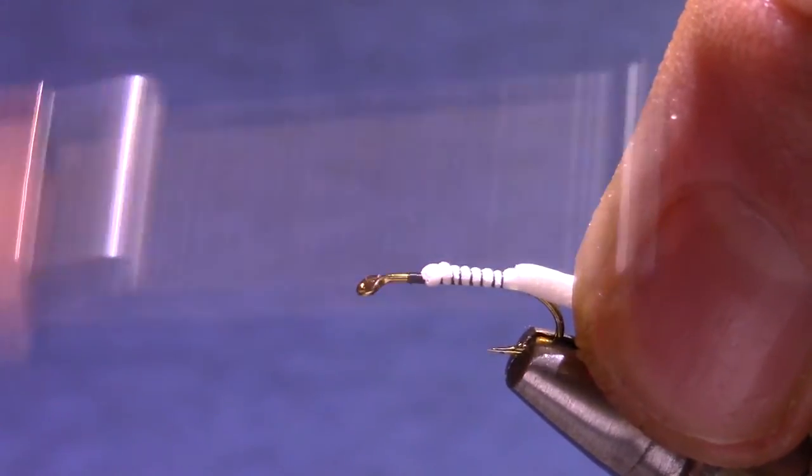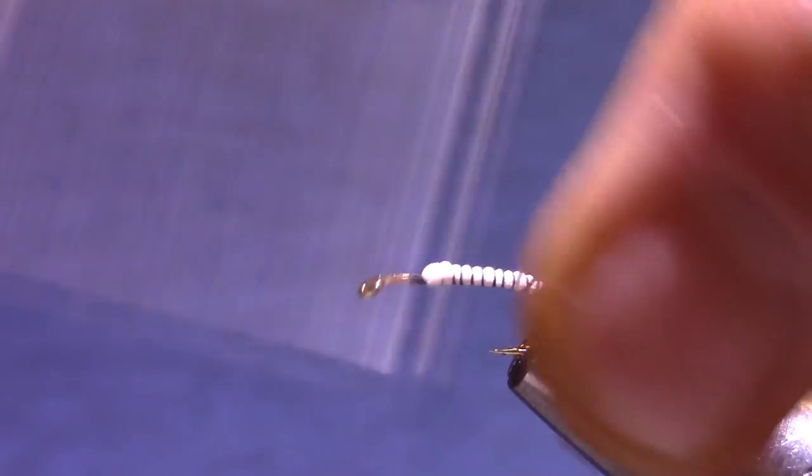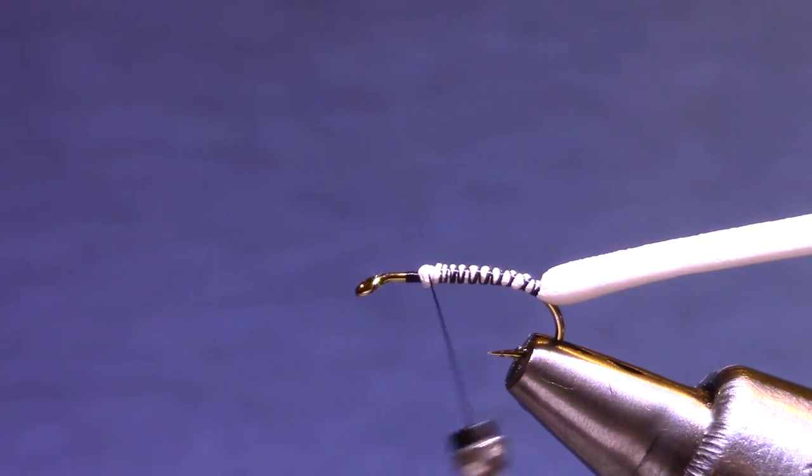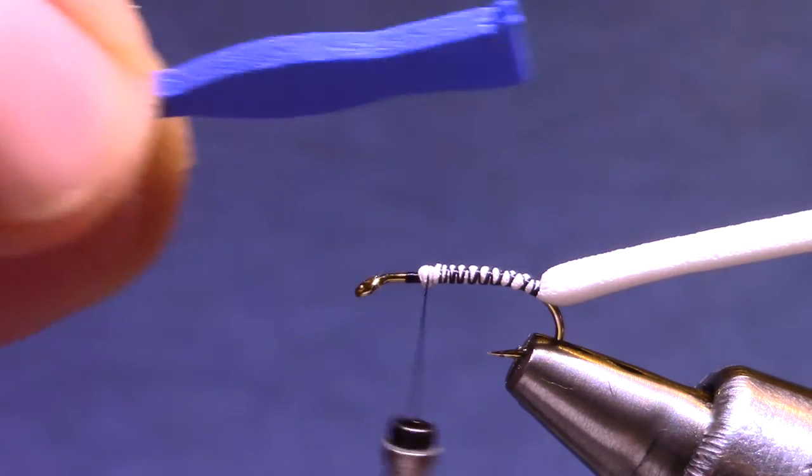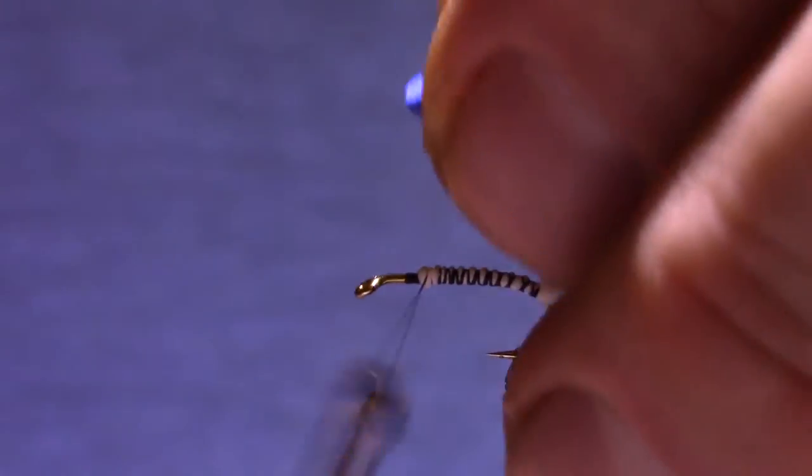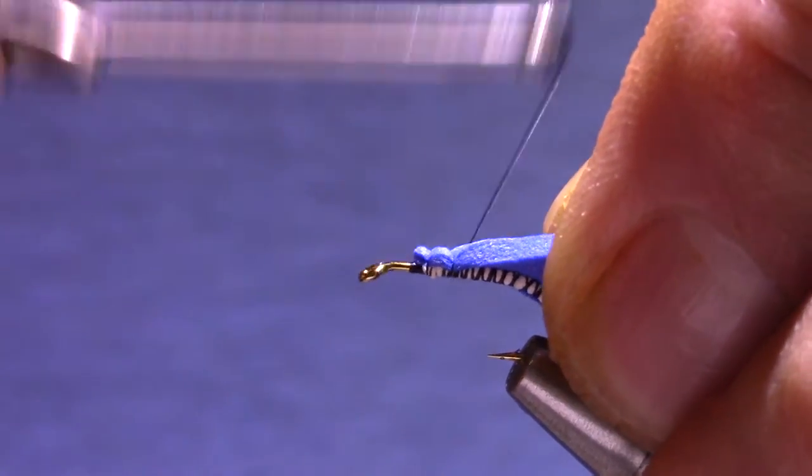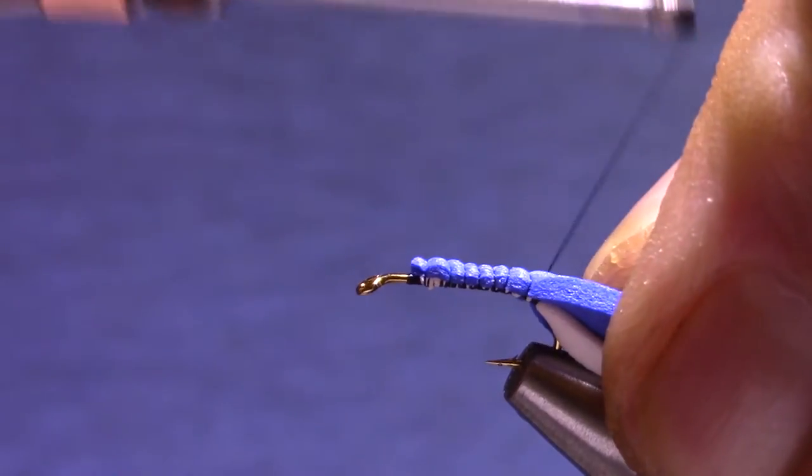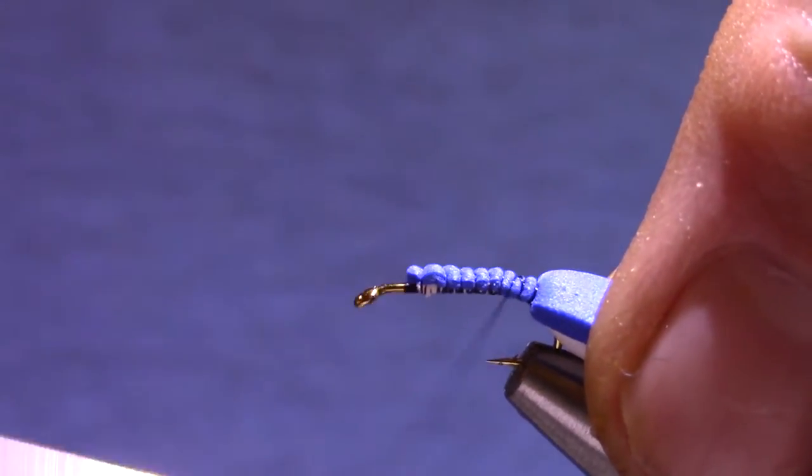I'm tying out a couple of eyes behind, eye lengths behind the eye. This is going to be our stripe on the back. And then I've got a size 12 Beetle body cut with the River Road Creations Beetle Cutter. And I'm going to start that about the same place and bring my thread back until it's just a tiny little bit down the bend.